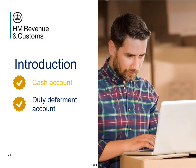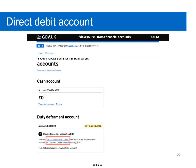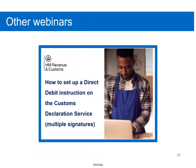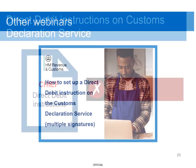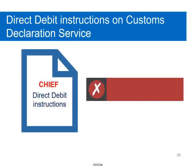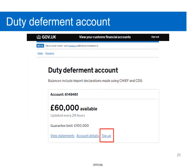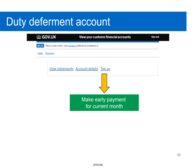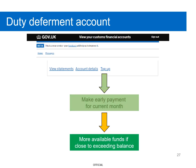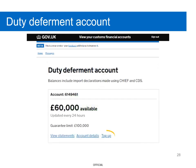Let's move on to the Duty Deferment Account. With the Duty Deferment Account, it's important to ensure you have set up a new Direct Debit Instruction. If you need further guidance on how to set up new Direct Debit Instructions, please refer to our webinars on this topic. However, please do not cancel the outstanding CHIEF Direct Debit Instructions, as it will be used to settle any outstanding CHIEF payments. The Customs Declaration Service Duty Deferment Account has a new Top Up feature, which lets you make an early payment for the current month. This gives you more available funds if you're close to exceeding your balance. To find out how to make a Top Up payment, select the Top Up link and follow the on-screen prompts.